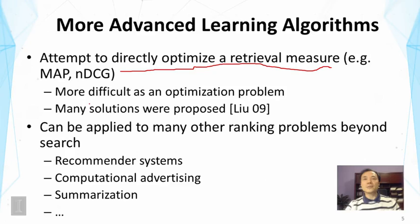These learning-to-rank approaches are actually general, so they can also be applied to many other ranking problems, not just the retrieval problem. For example, recommendation systems, computational advertising, or summarization — and there are many others that you can encounter in your applications.